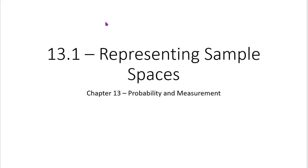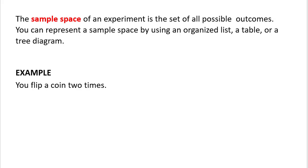Today we're going to start our probability unit and we're going to be talking about representing sample spaces — the different ways we can talk about all the outcomes. A sample space of an experiment is a set of all possible outcomes. You can represent a sample space by an organized list, a table, or a tree diagram.